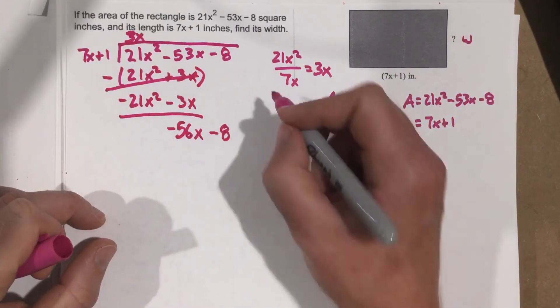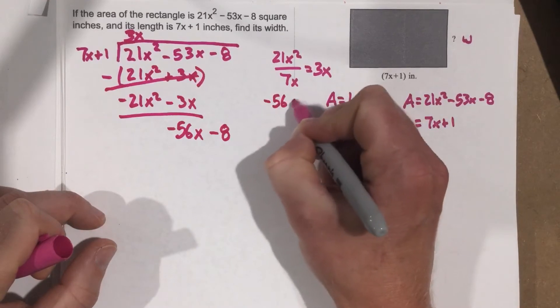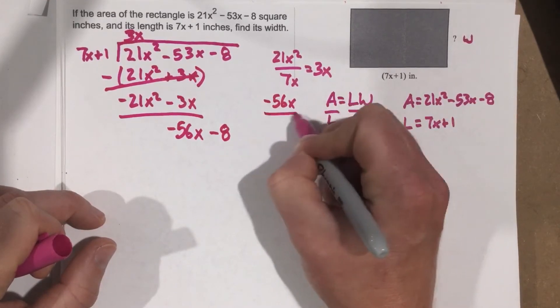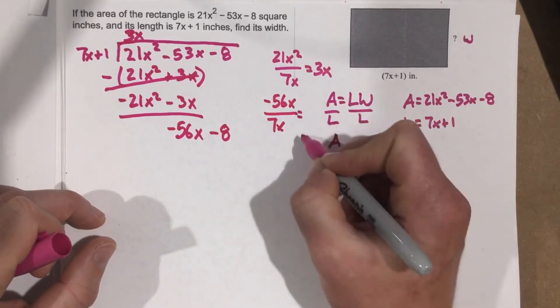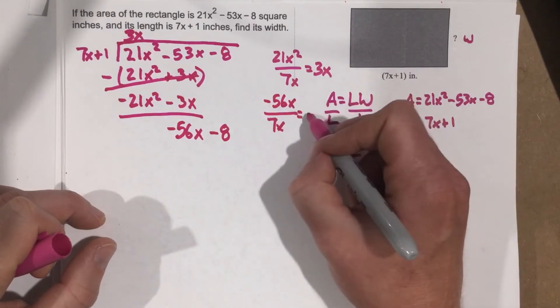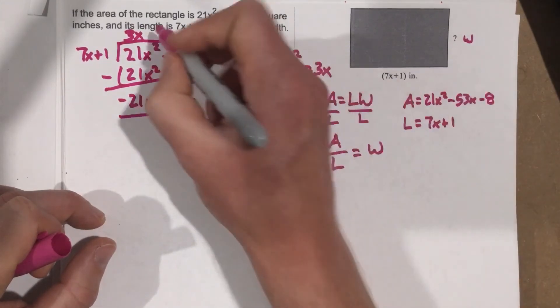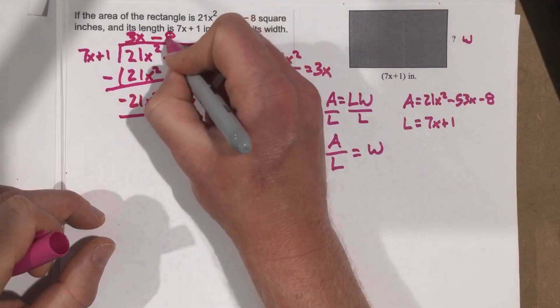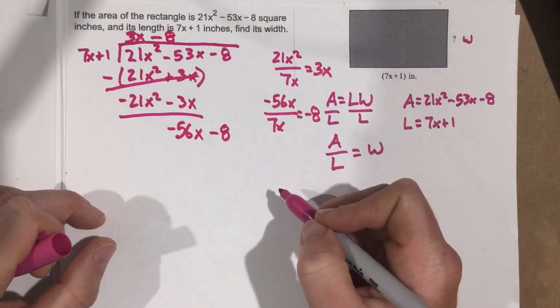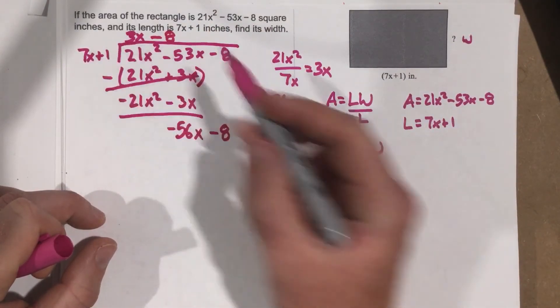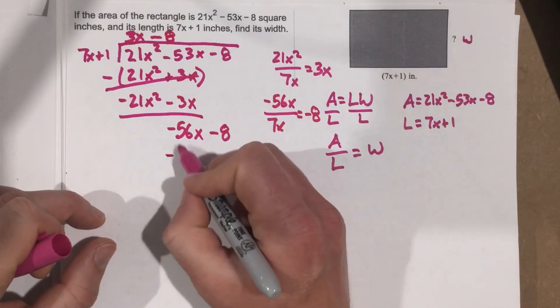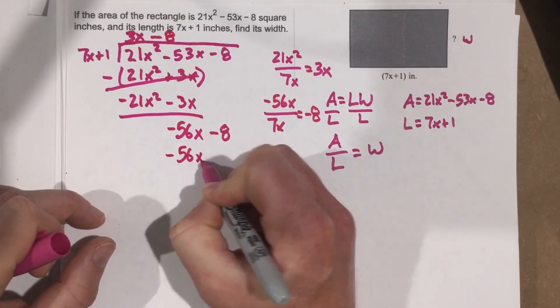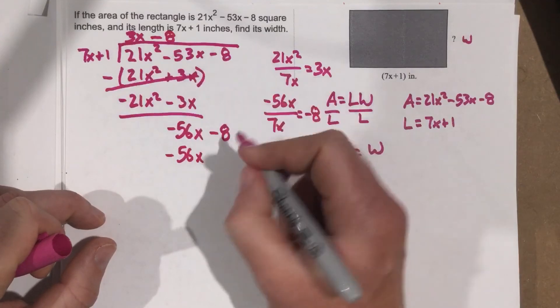7x goes into negative 56x. Well, the x's cancel. I use you with negative 56 over 7, which is negative 8. So we have minus 8. Multiply the negative 8 times the 7x. That's negative 56x. Negative 8 times 1 is negative 8.